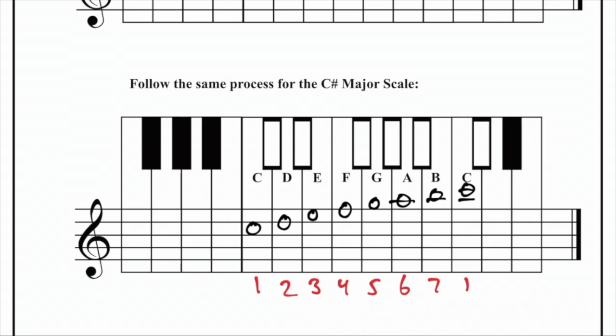Write the intervals. Whole, whole, half step, whole, and now we begin the second tetrachord. Whole, whole, half step.